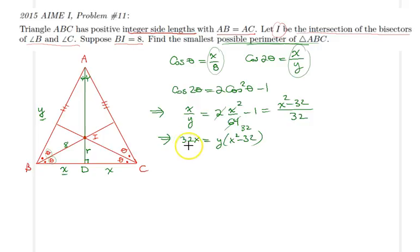Now we need to make a couple of remarks here. One of the things that we can immediately observe is that the left hand side is always greater than zero, and the right hand side should also be greater than zero. We already know y is greater than zero, so it must be the case that x squared minus 32 is greater than zero. So from here we can say that x squared is greater than 32, or x is strictly greater than 5.5.